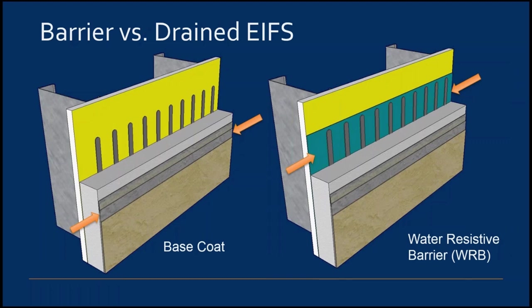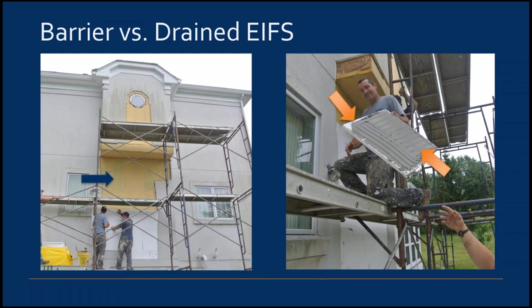There are two main types of EIFS: barrier and drained. Barrier EIFS relies solely on the base coat to protect against water infiltration. Drained EIFS also uses the base coat as a defense, but a water-resistive barrier supplied by the EIFS manufacturer is used as the main protection, along with flashing and other components to direct water to the exterior. Be careful not to assume that drained EIFS is installed simply because a water-resistive barrier is applied — without proper drainage components such as flashings, it will technically perform as barrier EIFS.